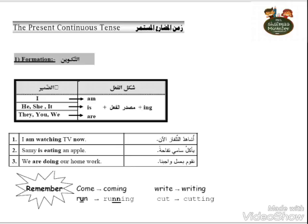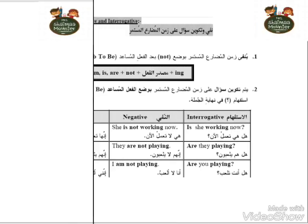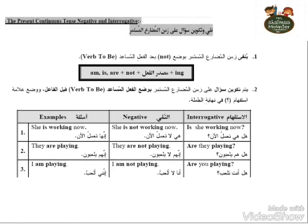يبقى كل الأحداث بتكلم عن المضارع المستمر، حاجة بتحصل دلوقتي. في النفي والسؤال: في النفي بنحط not بعد am، is، are. يعني بقول am not، is not، are not. لكن في السؤال بنبدأ بـ am، is، أو are. وهنا عندنا some examples ممكن نرجع عليها.